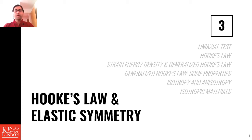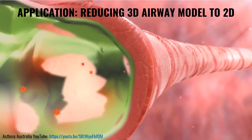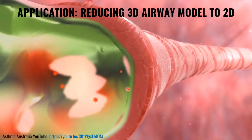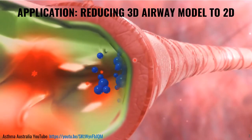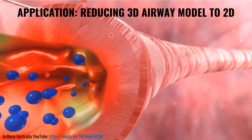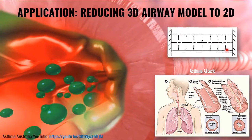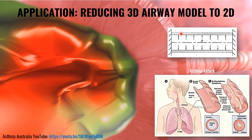In the third part of this lecture, we talk about Hooke's law and elastic symmetry. Here is an example application. Assume in the case of asthma, the airways cross-section reduces, causing difficulty in breathing. To model this, we can simplify the 3D geometry to a 2D geometry, and then calculate the stress and strains. Then we can generalize the results to the 3D case. This is what we are going to discuss in the rest of this session and the next lecture.